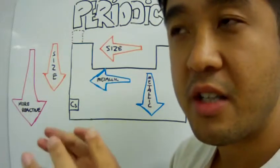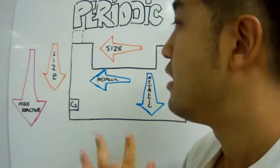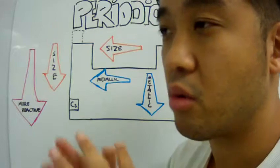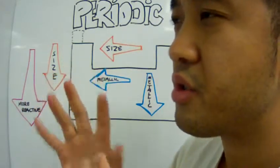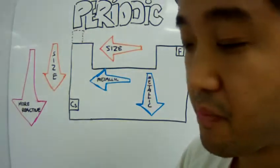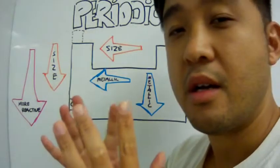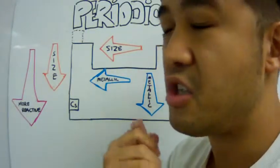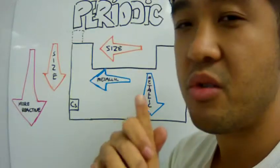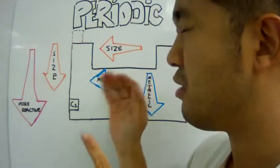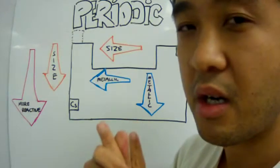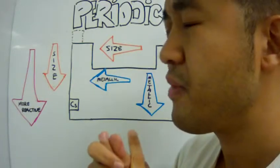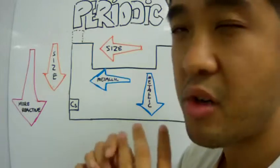We're going to talk about the general trends of the periodic table. When you look up trends of the periodic table, you see a whole slew of trends, from electronic activity to ionization energy and others. We're not concerned about that at the moment. What we're really going to focus on is three major trends: atomic size, reactivity in terms of metals and non-metals, and metallic trends in the periodic table.